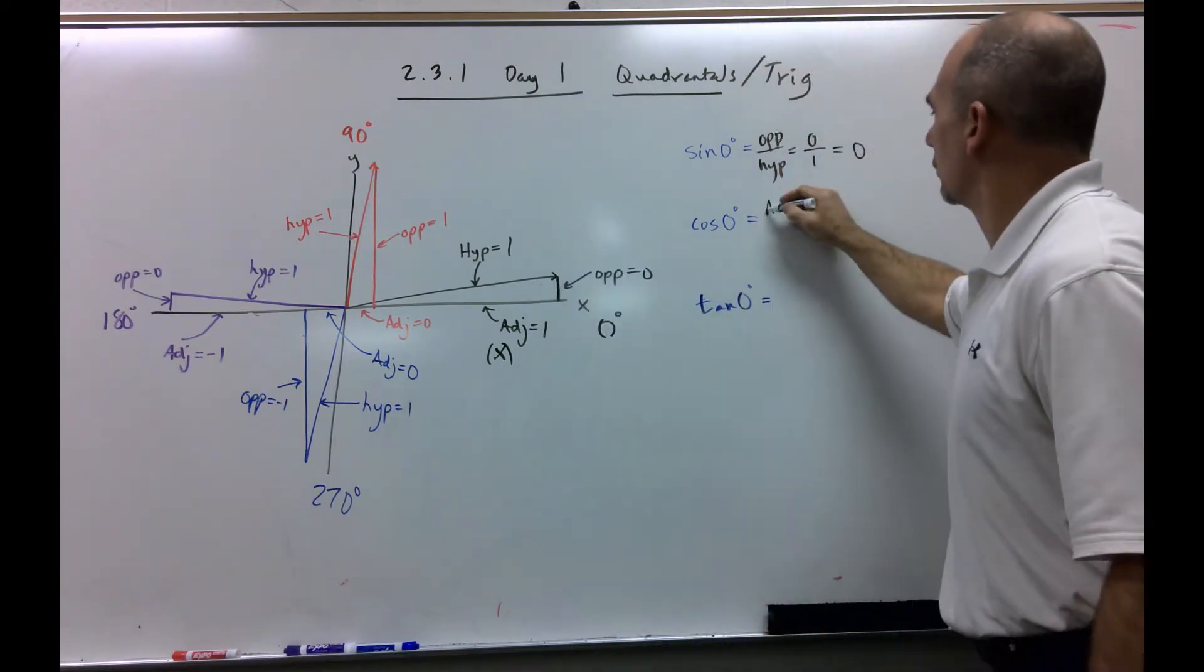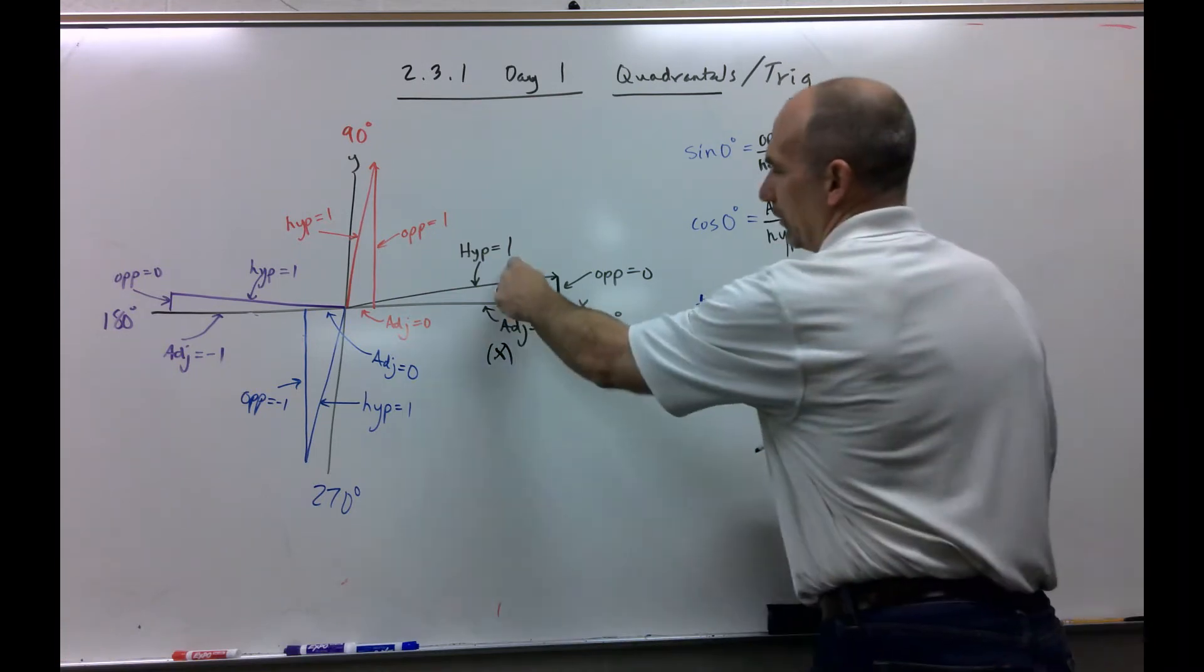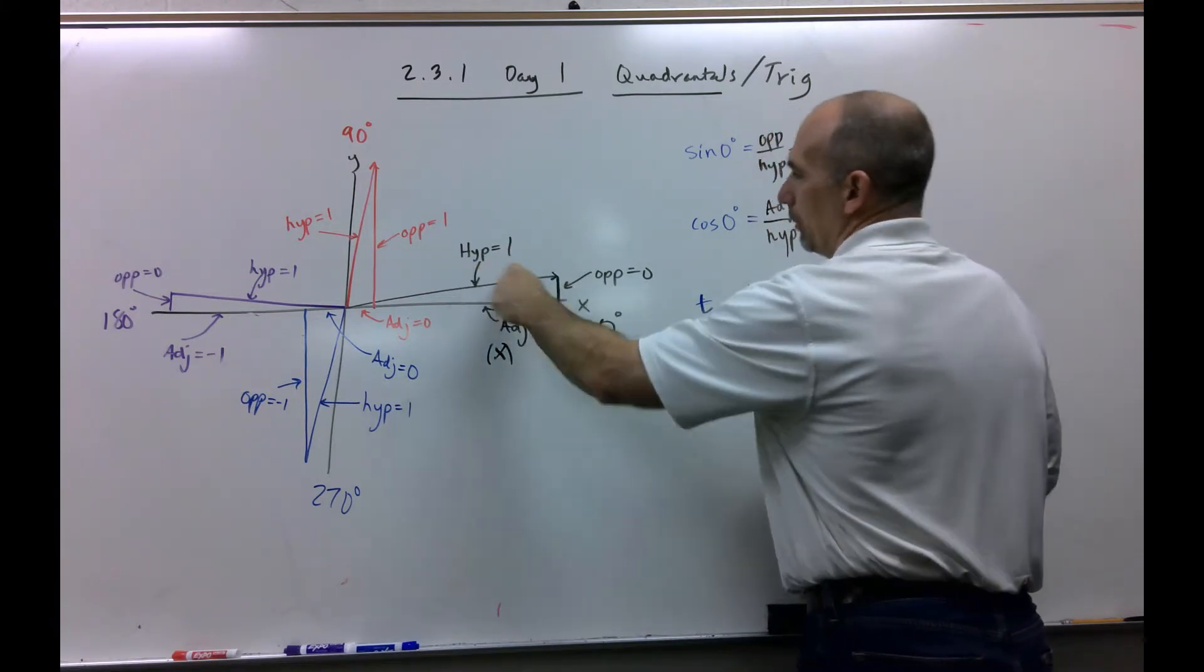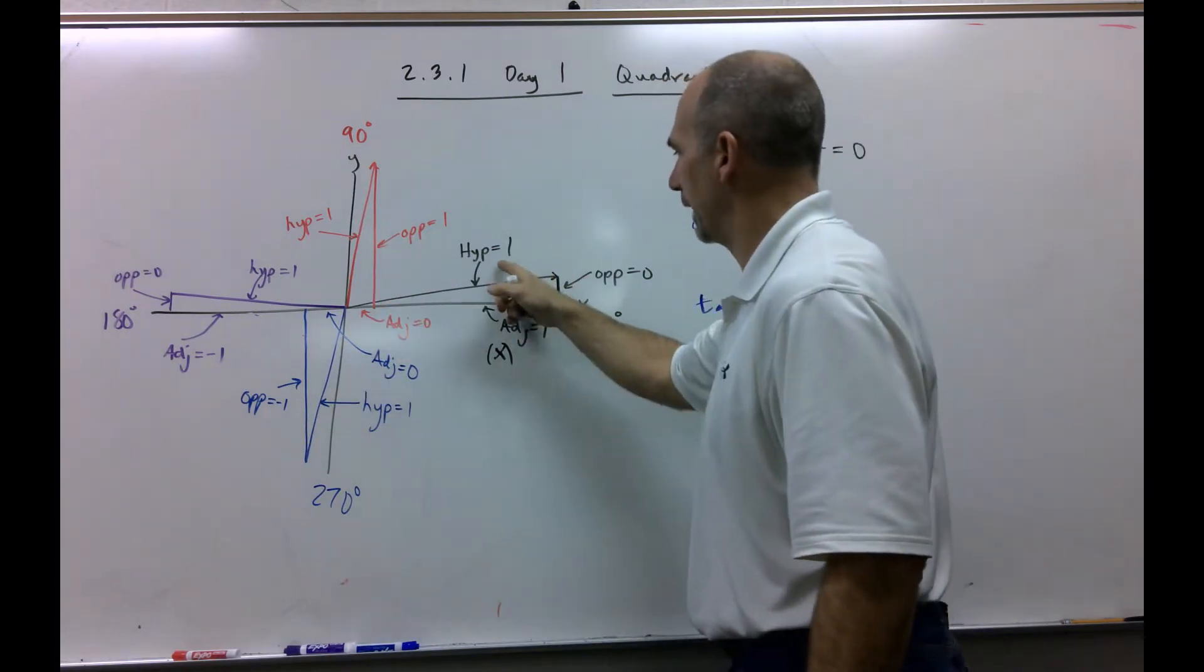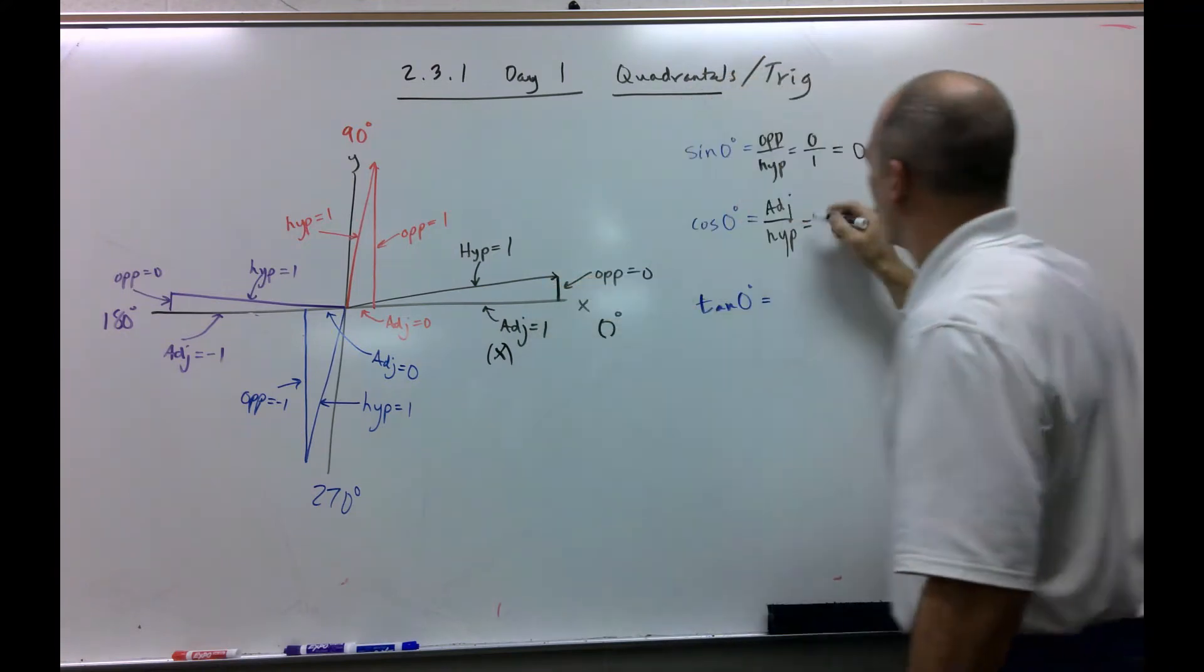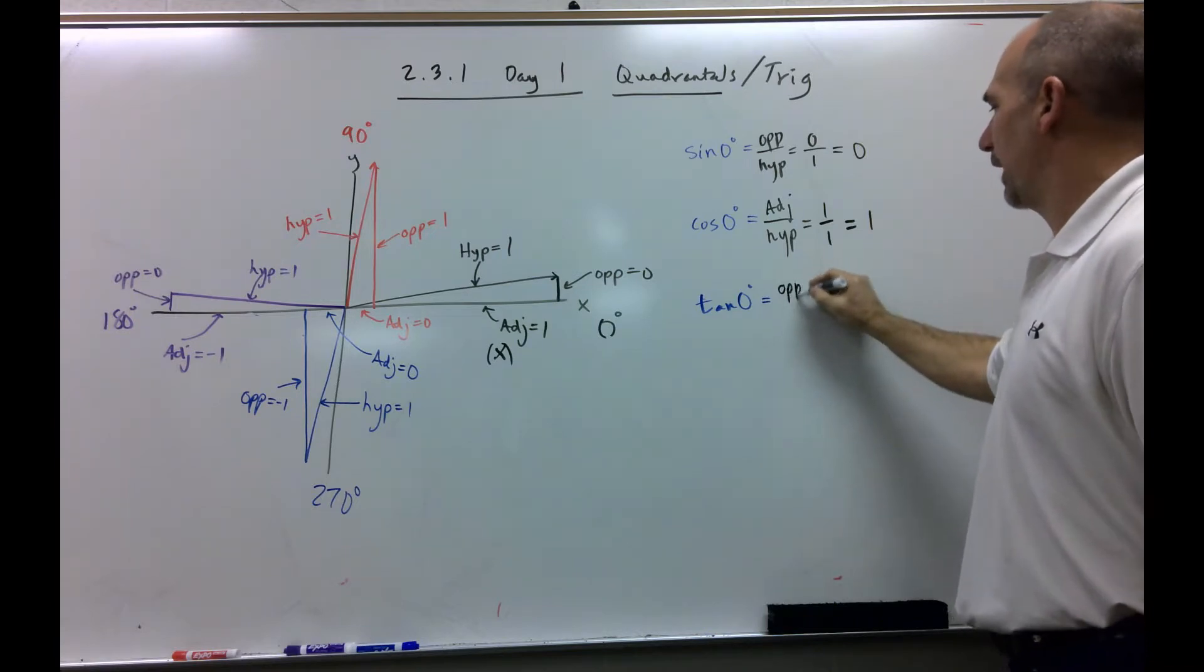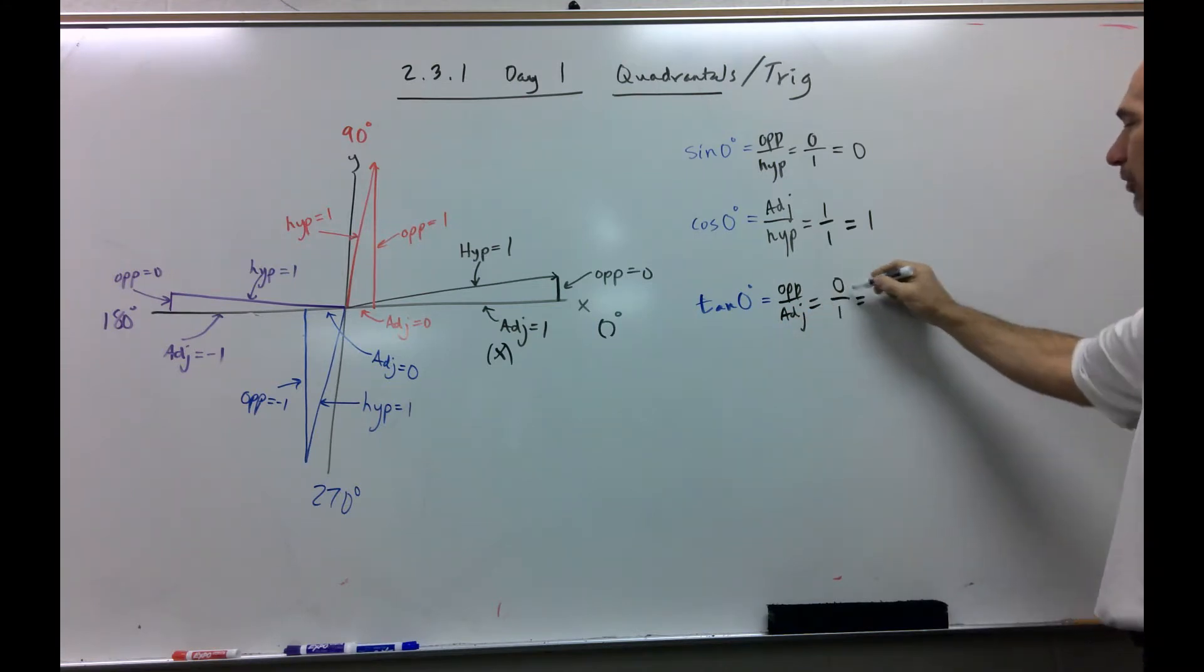Cosine. Cosine is adjacent over hypotenuse. Notice, they're both the same. This would be 1 over 1, which is just 1. Tangent, that's defined as opposite over adjacent. The opposite side disappears. The adjacent side we're calling 1. 0 over anything is 0.